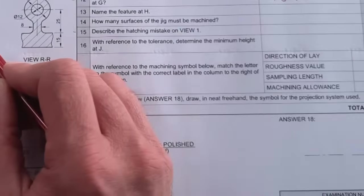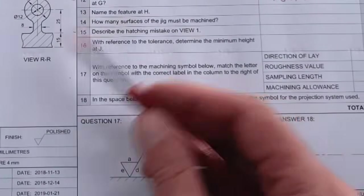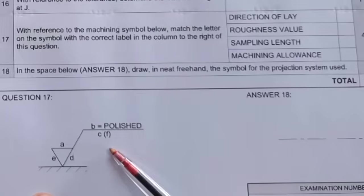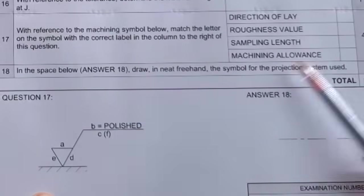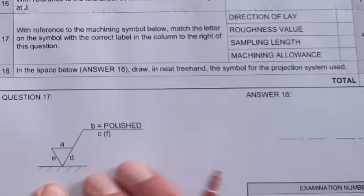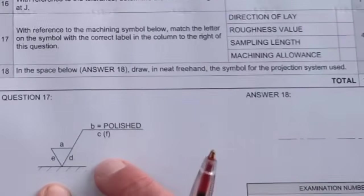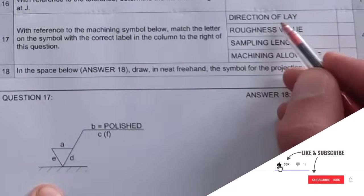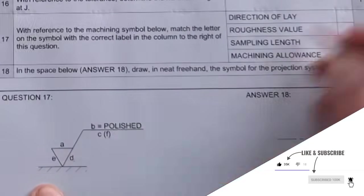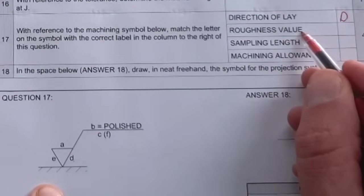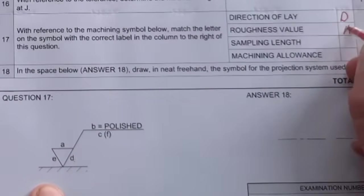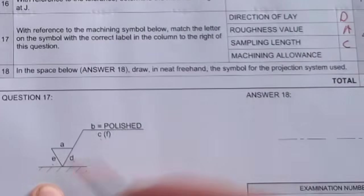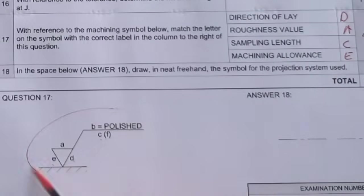We're jumping down to 17. With reference to the machining symbol below - this is this machining symbol here - match the letter on the symbol with a correct label in the column on the right of the question. Now this is also in your workbooks, especially if you've got JP EGD. Make sure you study the breakdown on this, but you need to be able to identify that the direction of the lay is here at D. Then the roughness value is indicated at A. The sampling length is indicated at C. Your machining allowance is indicated at E. Make sure you study these symbols in your workbooks.